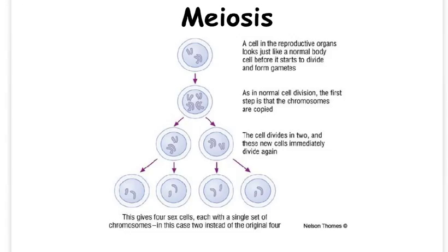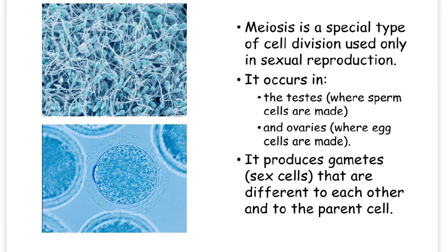Meiosis is another form of cell division. This is a special kind of cell division that results in the production of gametes, or sex cells — this is the way that egg cells and sperm cells are made. The reason this process has to be different is because sex cells are haploid cells, meaning they only contain one set of chromosomes rather than pairs. Meiosis takes place in the testes to produce sperm cells, and the ovaries to produce egg cells. The cells produced by meiosis are different to each other and to the parent cells they came from.